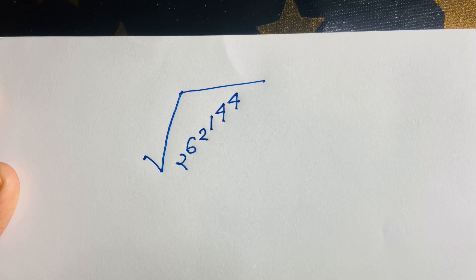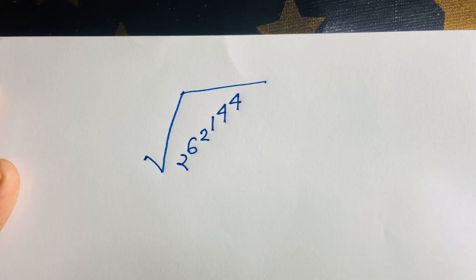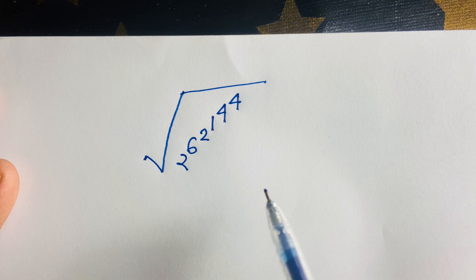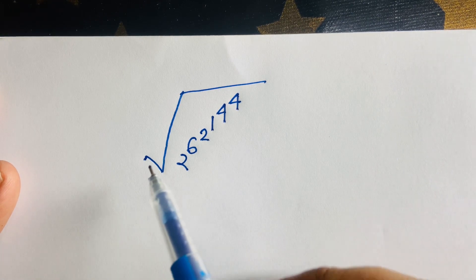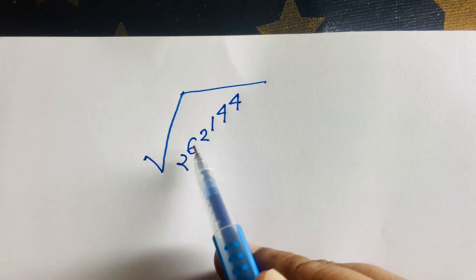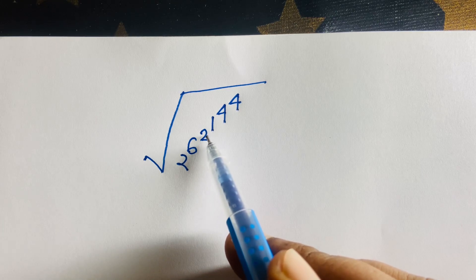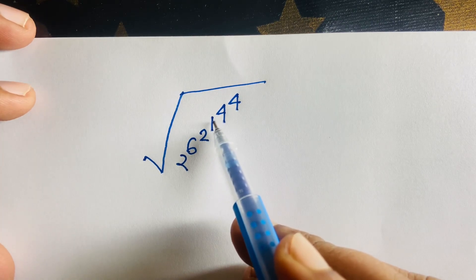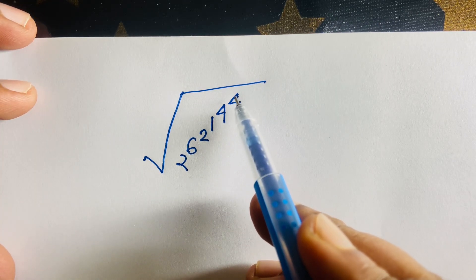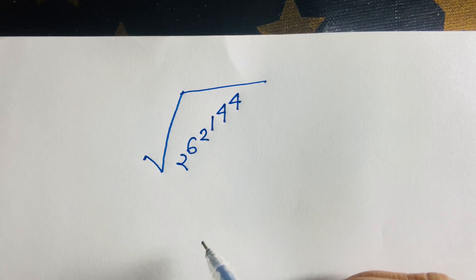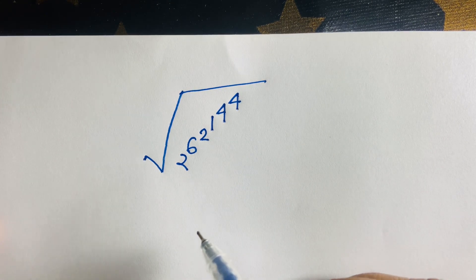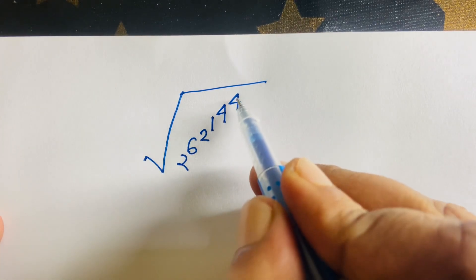Hello everyone. In this video we solve this Japanese Math Olympiad question without a calculator. We have a square root expression involving 2 to the power 6, and power 2, power 1, power 4, and power 4, and we find out the right answer.